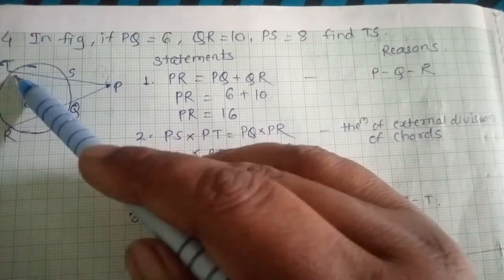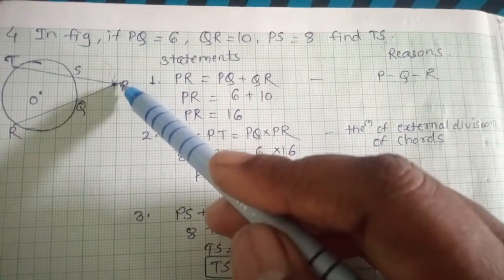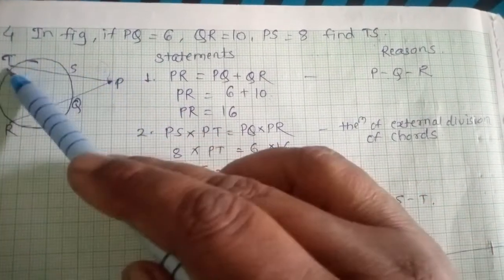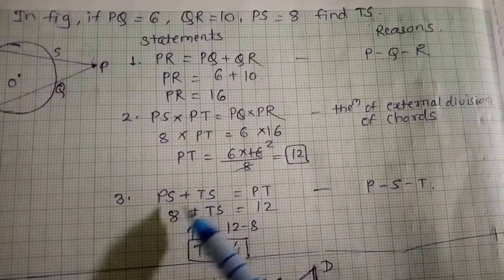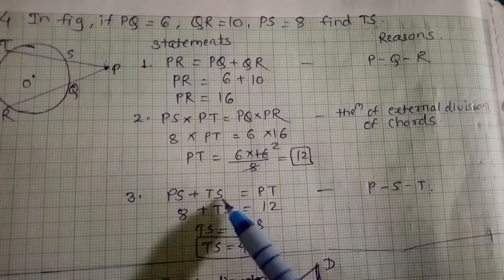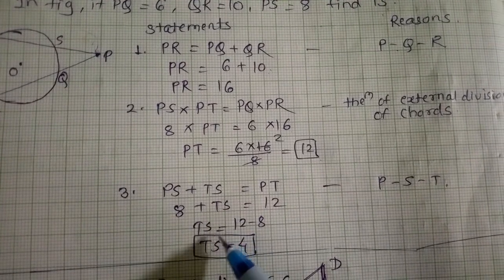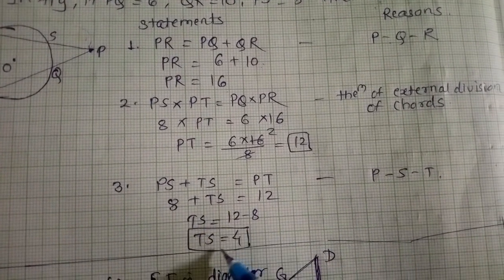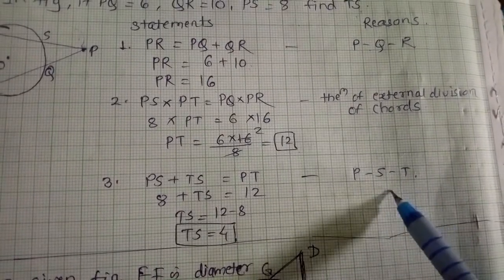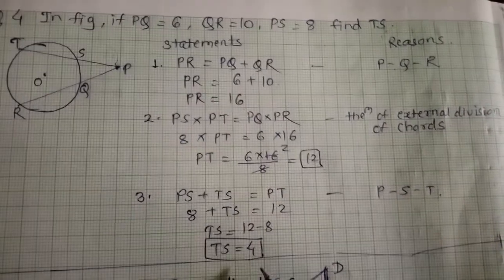But we need TS. Since PT = PS + TS, we have 12 = 8 + TS, so TS = 12 − 8 = 4. The reason is P–S–T. Therefore TS = 4.